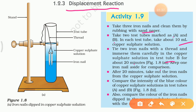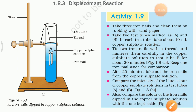Keep 1 iron nail aside for comparison. After 20 minutes, we will take out the iron nails from the copper sulphate solution. Now we will compare the intensity of the blue color of copper sulphate solution in test tube A and test tube B. Also, we will compare the color of the iron nail dipped in copper sulphate solution with the other iron nail which we kept aside.